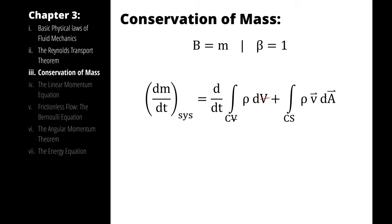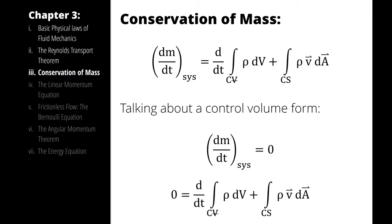We can start to simplify this depending on our circumstance. If we're talking about a control volume, as in chapter 3, then dm/dt of our system is 0. So I can write: 0 equals the time rate of change of the integral of density with respect to volume, plus the integral across the control surface of density times the velocity vector with respect to area.